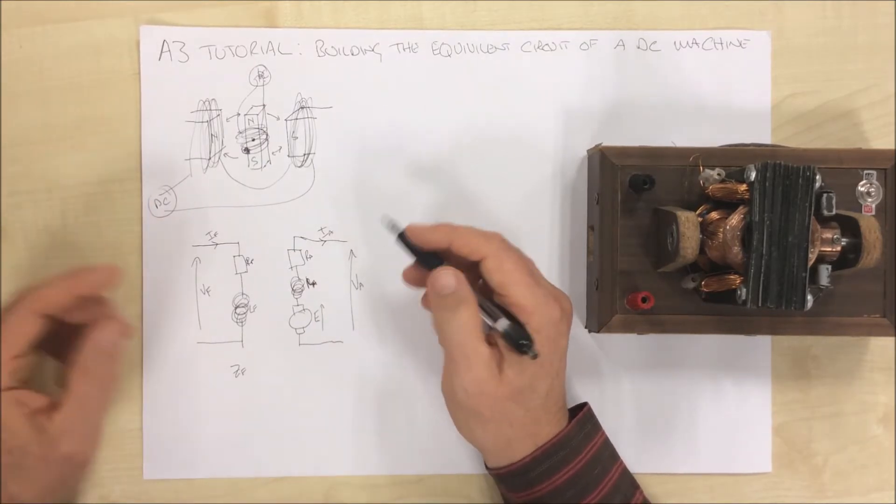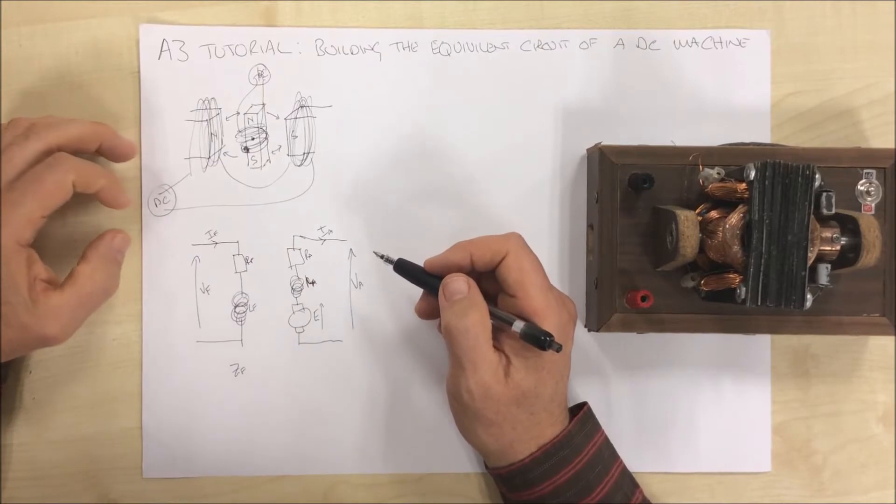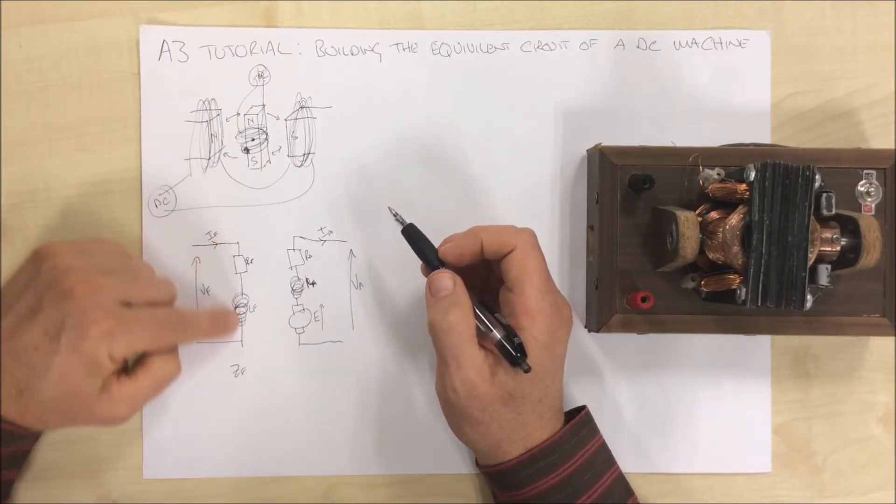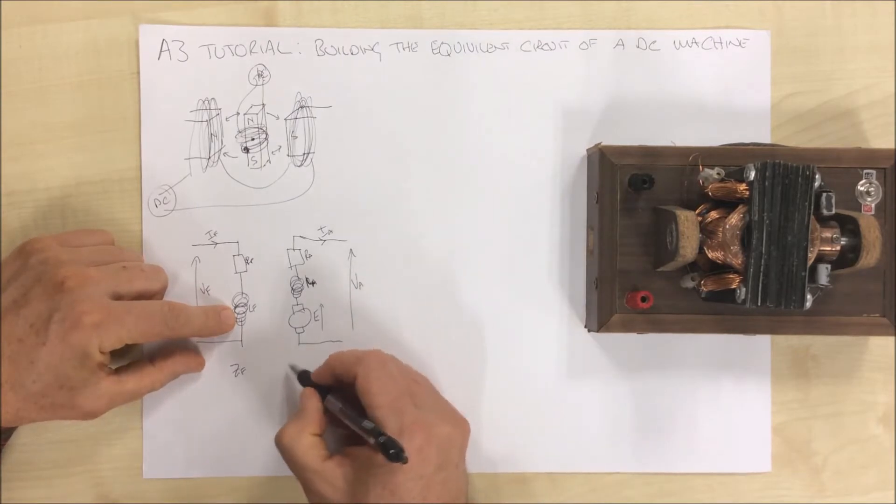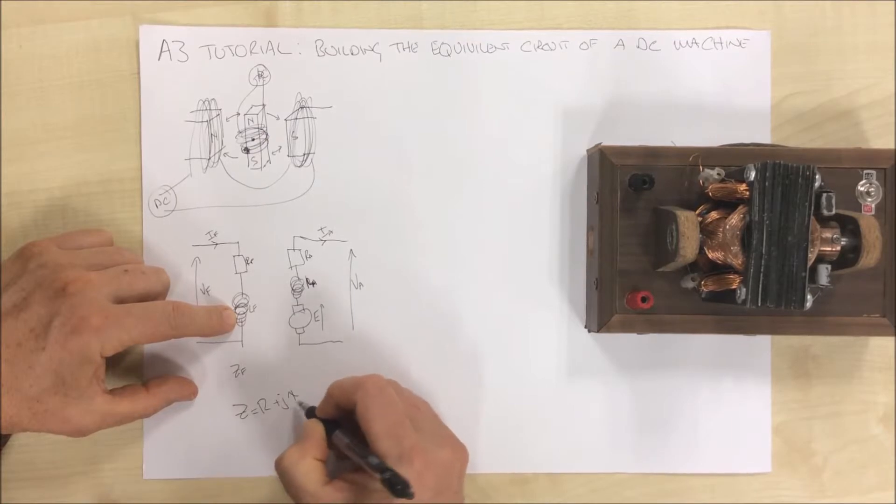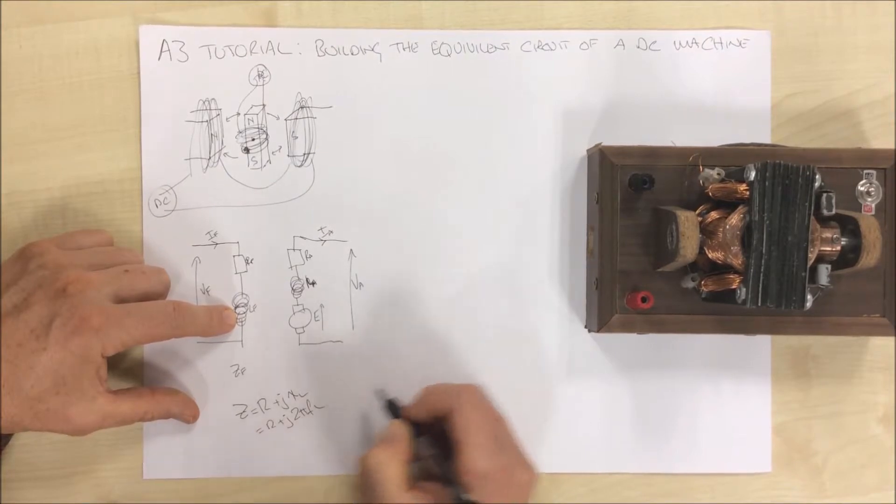It's a very simple series circuit as each of these are considered. Now, the impedance in here, as you know, an impedance is R plus jXL, which equals R plus j2πFL.